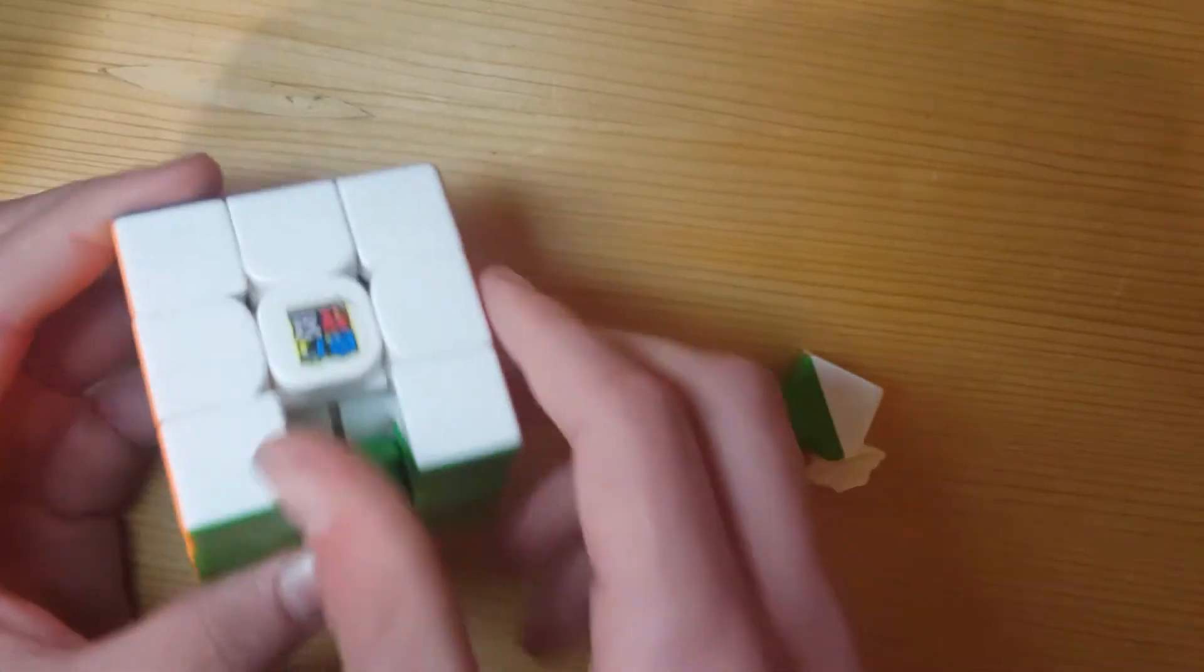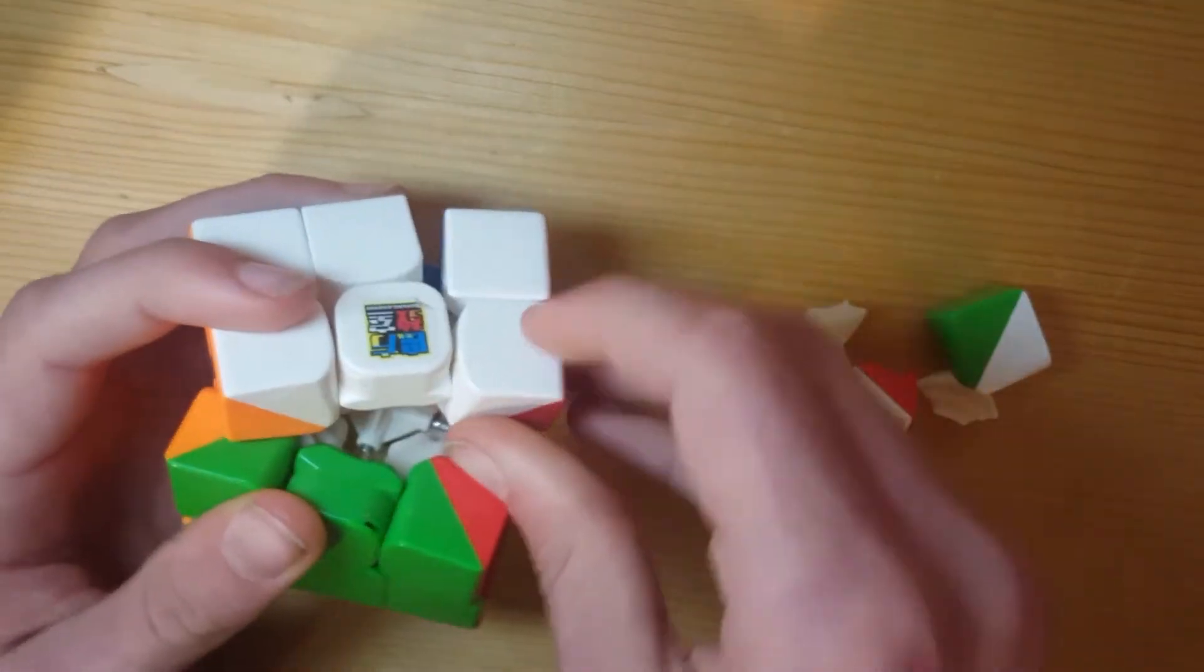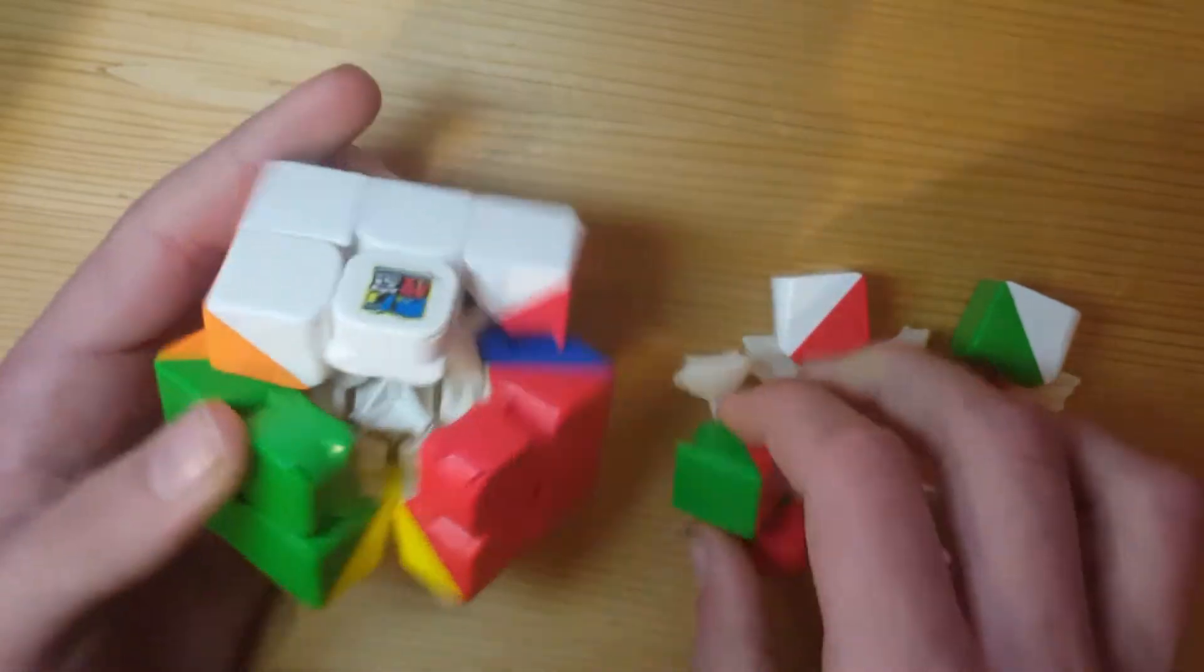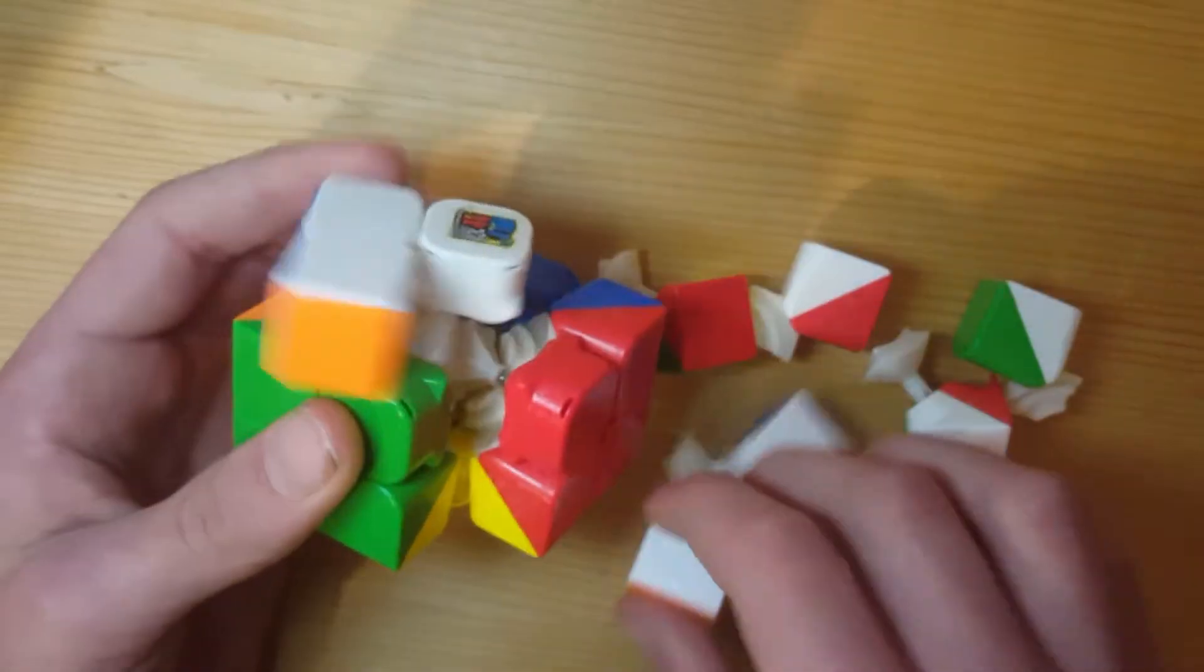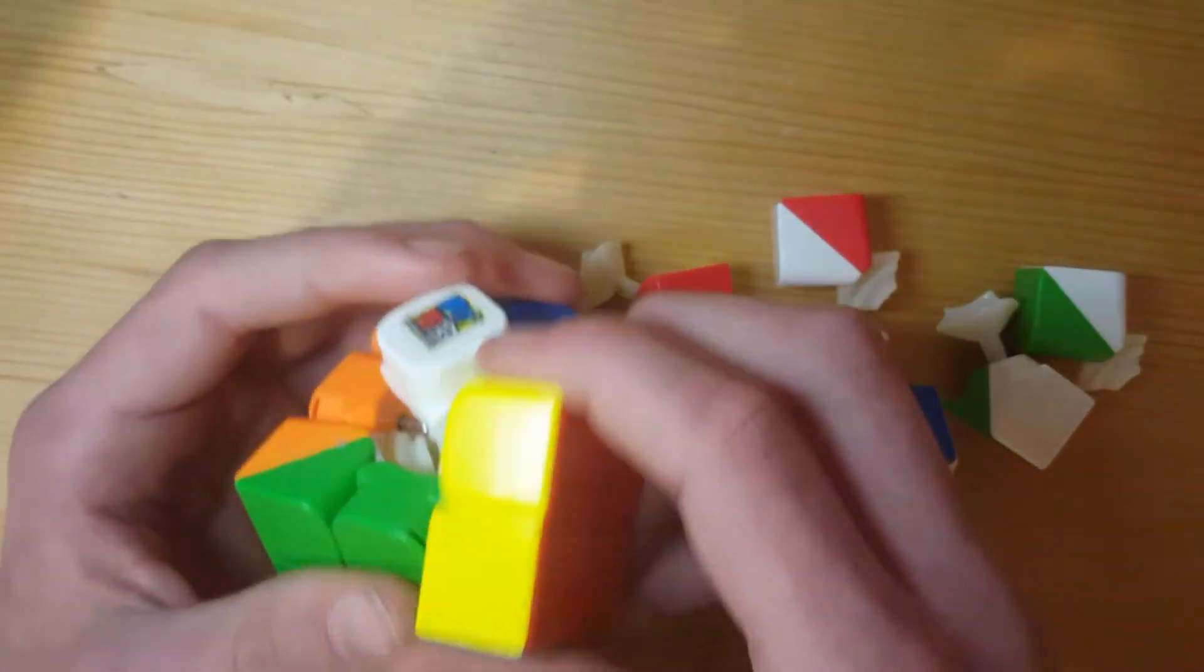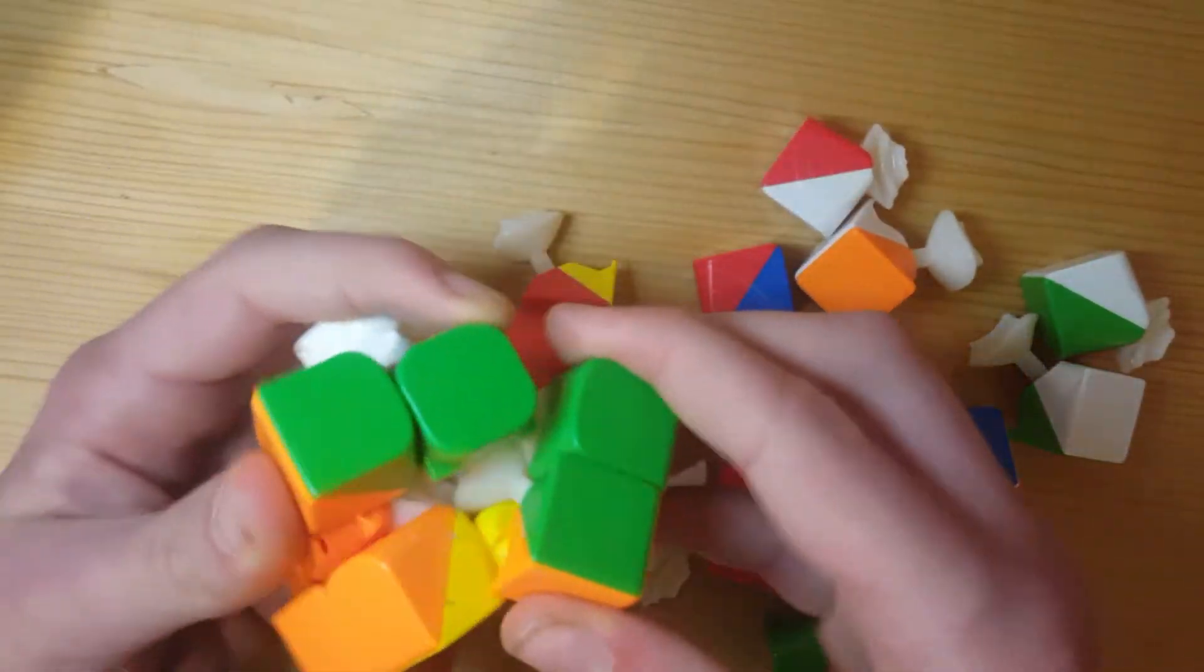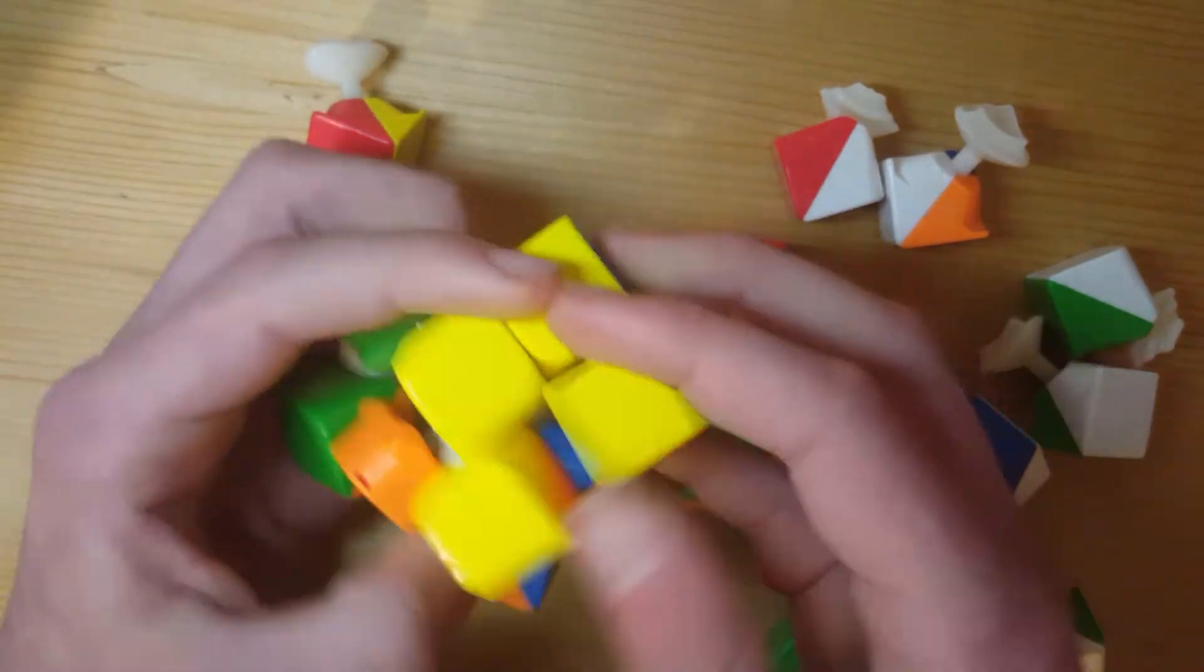Now from here it's pretty easy, you're just gonna pull out the corner pieces and then the edge pieces and disassemble the pieces one by one or just grab it. If you pull out the section here it makes it easy to pull out all of these ones. And then you can just pull out little chunks and then it just kind of falls apart.